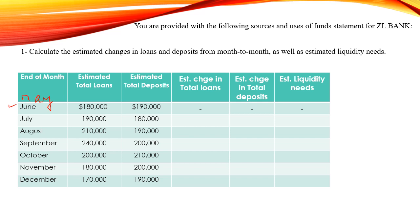Regarding the month of July, to determine the estimated change in total loans, it is 190 thousand minus 180 thousand, which equals 10 thousand. The estimated change in total deposits is 180 thousand minus 190 thousand, which equals negative 10 thousand. To determine the liquidity needs, it is the estimated change in total loans minus the estimated change in total deposits: 10 thousand minus negative 10 thousand equals 20 thousand.